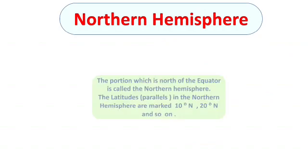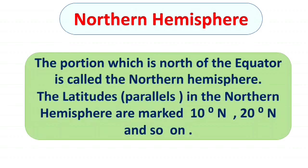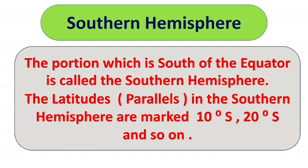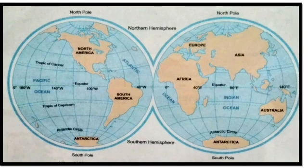First, we will talk about the northern hemisphere. The portion which is north of the equator is called the northern hemisphere. The latitudes or parallels in the northern hemisphere are marked as 10 degrees north, 20 degrees north, 30 degrees north, and so on. Now let's talk about the southern hemisphere. The portion which is south of the equator is called the southern hemisphere. The latitudes or parallels in the southern hemisphere are marked as 10 degrees south, 20 degrees south, 30 degrees south, 50 degrees south, and so on. As you can see in the picture, the area above the equator shows the northern hemisphere, and the area below the equator shows the southern hemisphere.